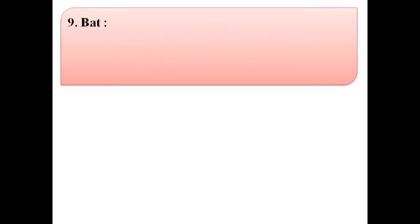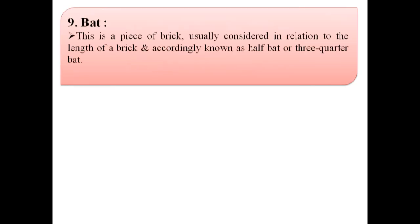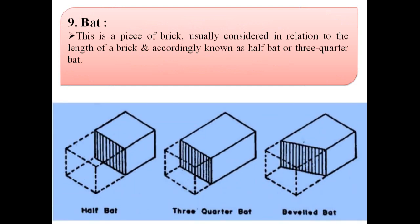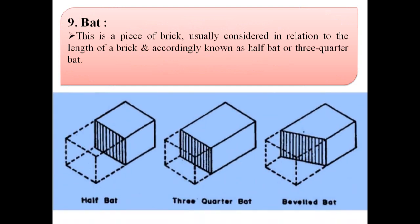The next term is bat. A bat is a piece of brick usually considered in relation to the length of a brick and accordingly known as a half bat or three quarter bat. In this image we can see the first one is a half bat, the second one is a three quarter bat, and the last one is a beveled bat.